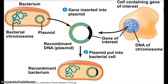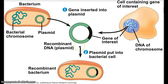They've cut the plasmid with a restriction enzyme, and they've cut out the gene of interest with the same restriction enzyme. They've inserted that gene into the plasmid and glued it together with the ligase. This is now called recombinant DNA. Then they've treated another bacterial cell and had it take up that recombinant DNA. So here we have the plasmid now with the inserted gene of interest.